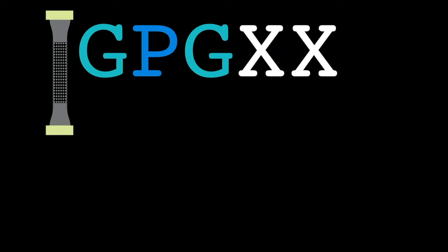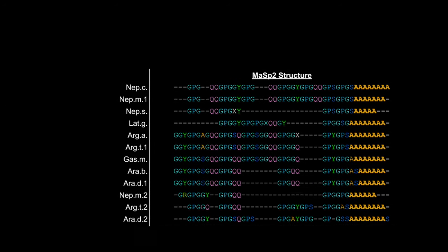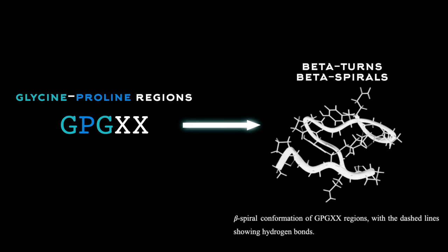The GPGXX regions in MaSp2 seem to be highly responsible for the elasticity of the fiber. There is a biophysical hypothesis to explain this as well. Molecular simulations have shown that such regions can form beta turns, and thus beta spirals when linked together.